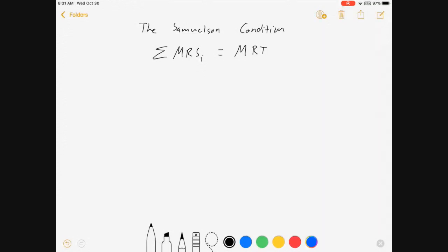And it was this, the sum of MRS sub I equals MRT, where the MRS sub I is equal to the marginal rate of substitution between a private good and a public good for individual I.